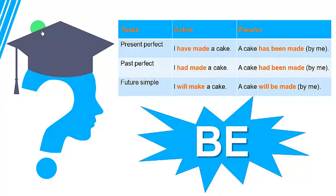A cake has been made by me. I have made a cake — this is present perfect. For past perfect, we are going to say: a cake had been made by me. With the future simple tense, when we use 'will': I will make a cake, we say: a cake will be made by me. Remember, verb 'to be'. What about other modal verbs? Like, when I say I can make a cake, we say: a cake can be made. I would make a cake — a cake would be made. I shall make a cake — a cake shall be made by me. So with any modal verb, you just put the modal verb as it is, plus verb 'to be', plus the past participle form of the verb.